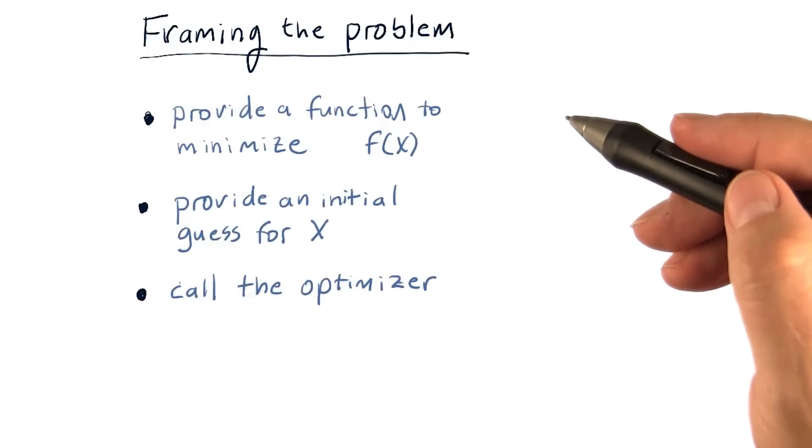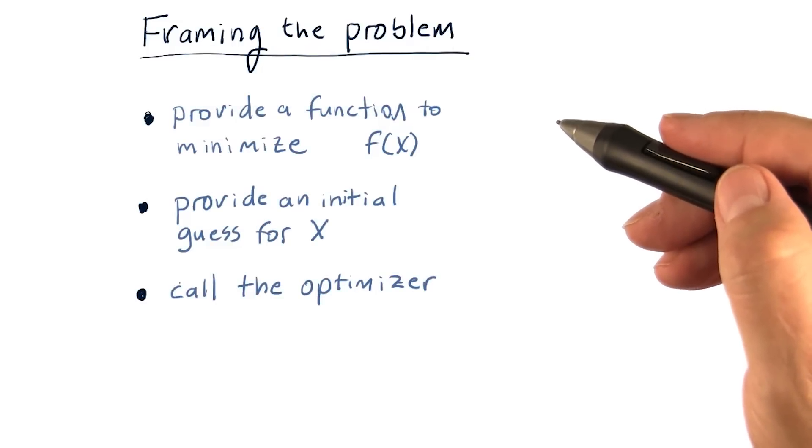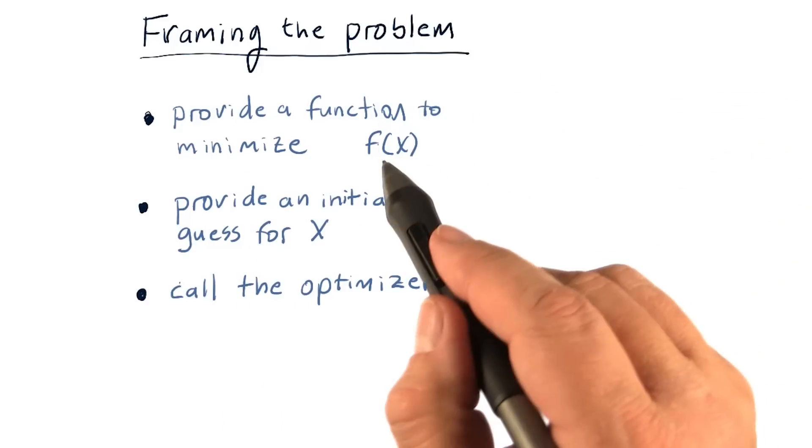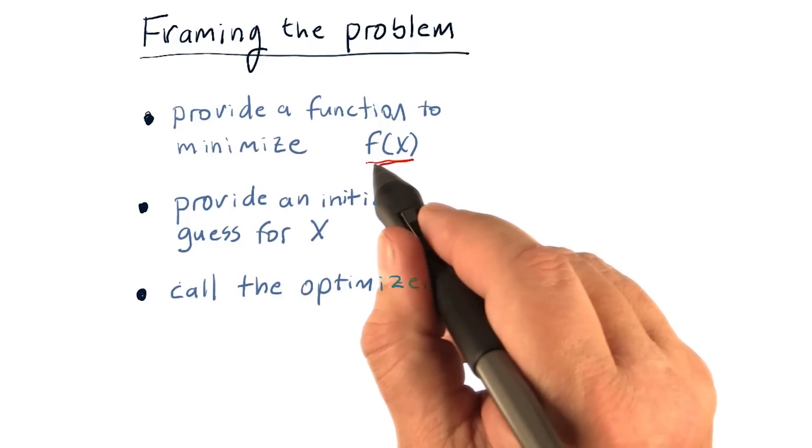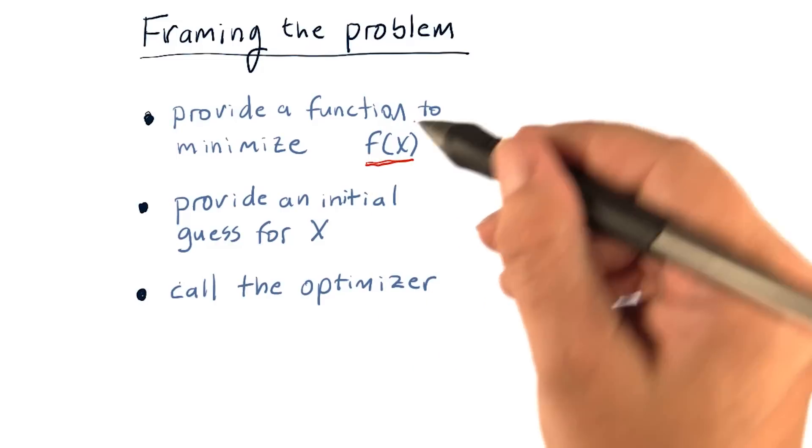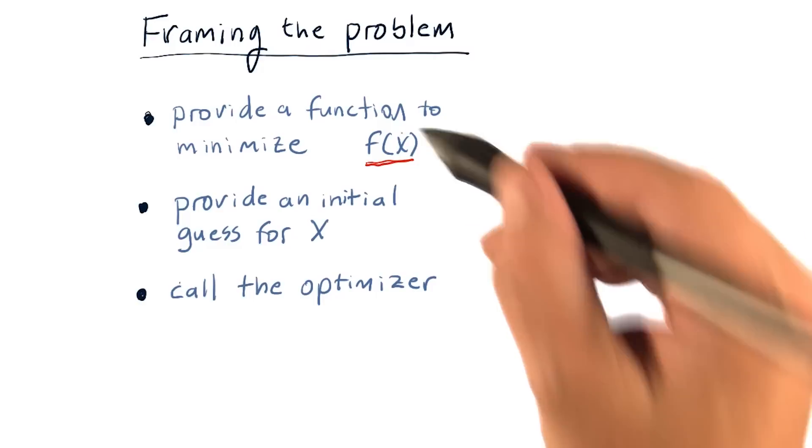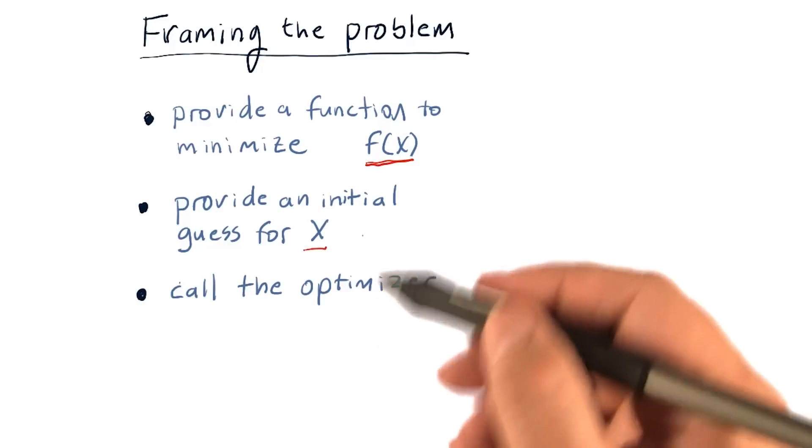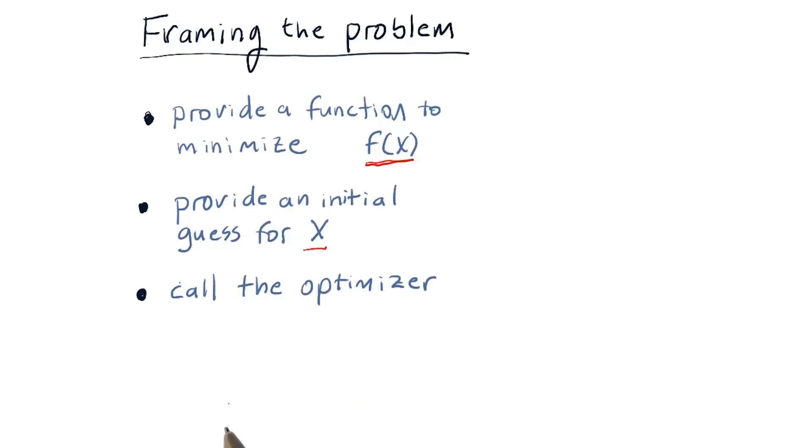As you recall, in order to use an optimizer that minimizes, we have to do three things. First, we have to provide a function to minimize f of x that takes in x. Two, an initial guess for that x. And three, call the optimizer and let it run.